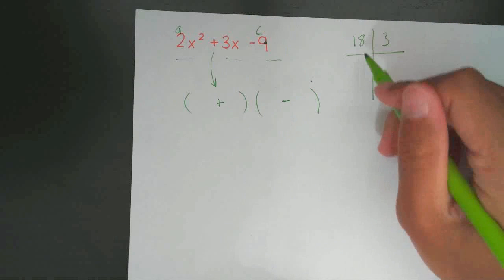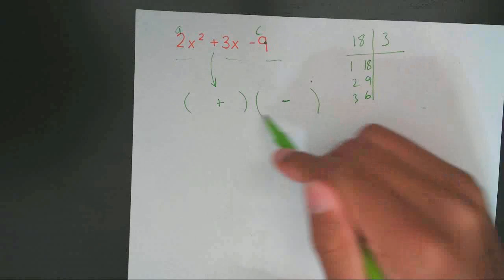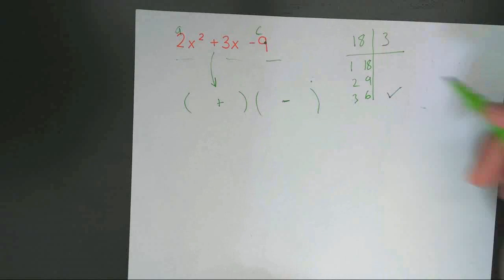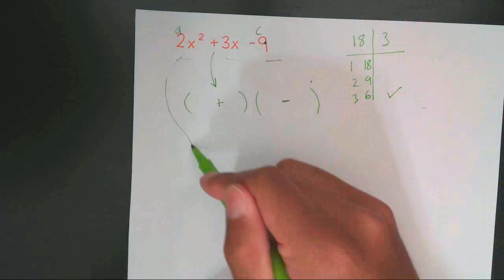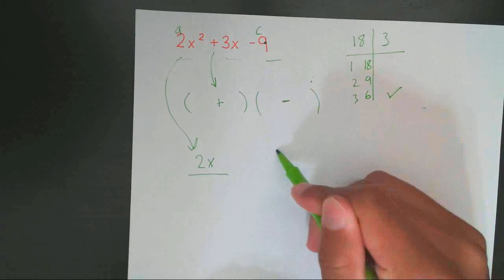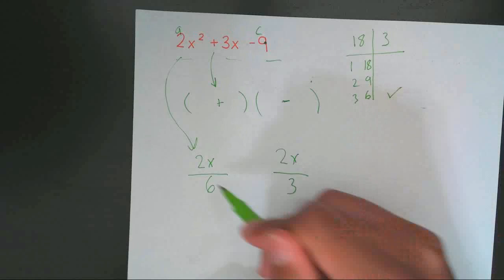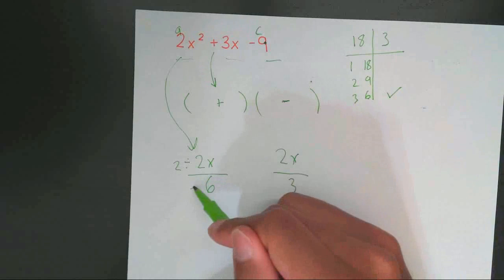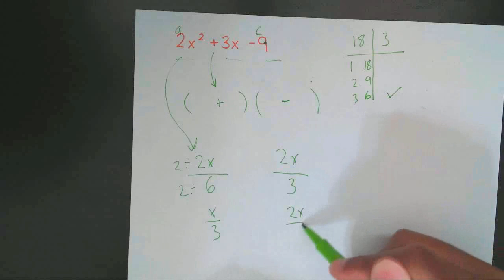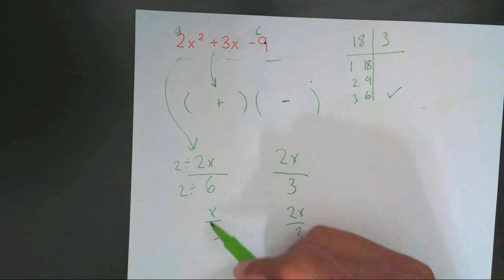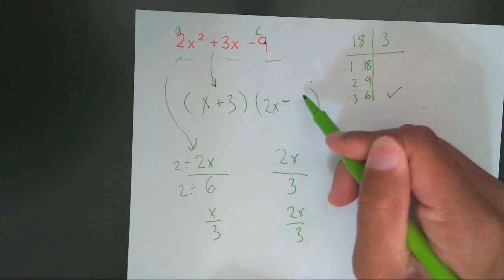So list your factors of 18. 1, 18, 2, 9, 3, 6. Since your signs are opposite, they have to subtract. I automatically know it's going to be 3 and 6. I can't put 6 in the first parentheses yet because there's a 2x. So I'm going to bring this 2x down. Set up two different fractions. Put the bigger number underneath the first one. Put the smaller one in the second one. Simplify them. They both can be divided by 2. Simplify to give me x over 3. 2x over 3 because it can't get simplified. Now the easiest part. Put x3, x3, 2x3, 2x3, and you are done.